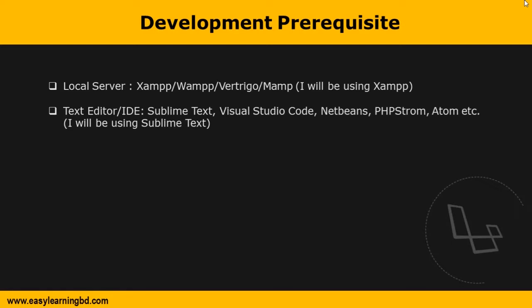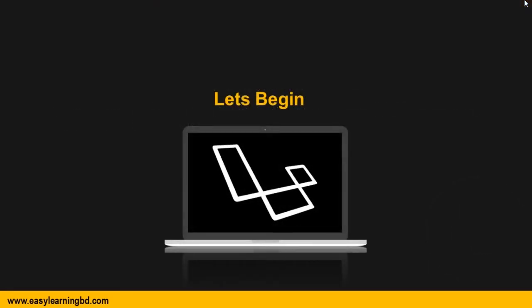For the development environment you will need one text editor or IDE, like Sublime Text, Visual Studio Code, NetBeans, PHPStorm, Atom, etc. All these editors are totally free software — you just have to download and install them on your system. I will be using Sublime Text for this project. That's all you will need for starting this course.